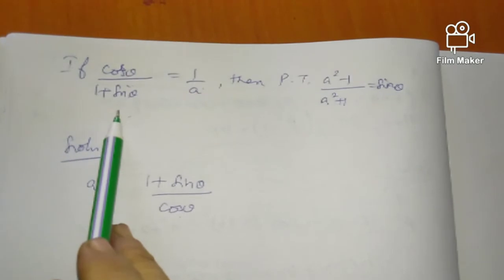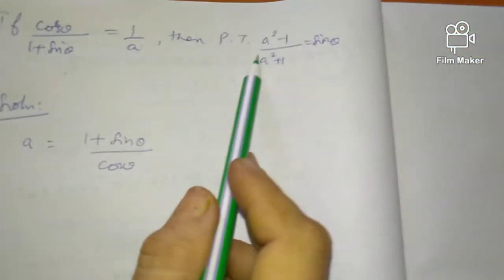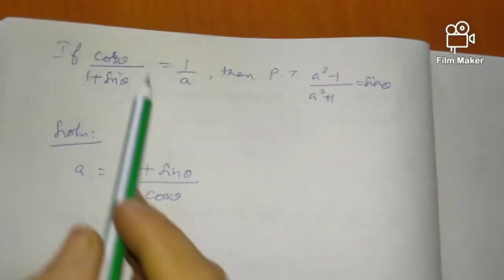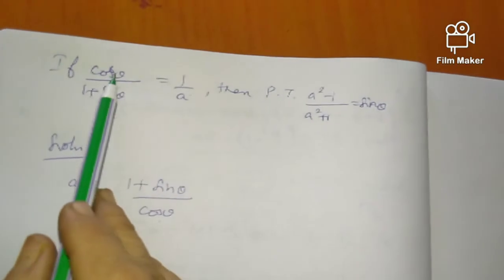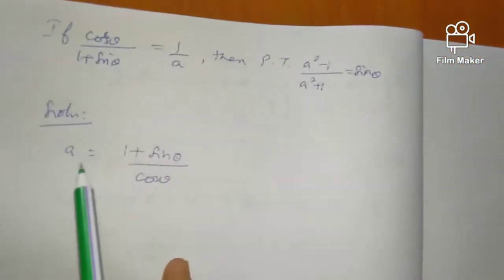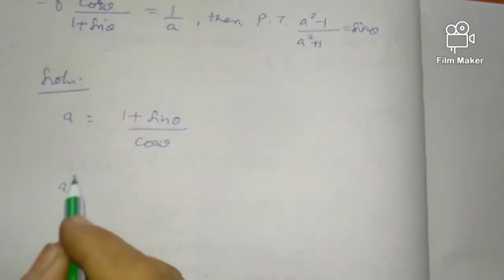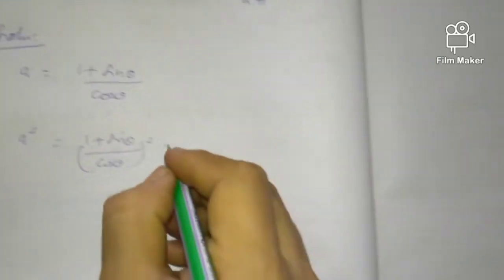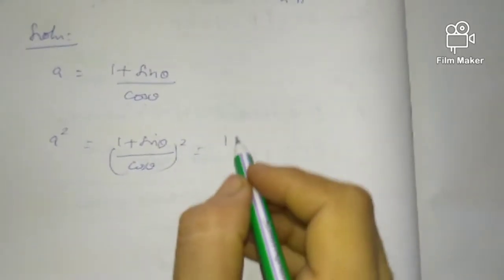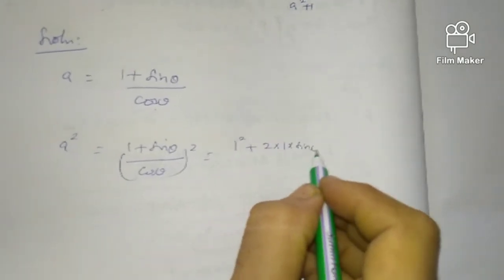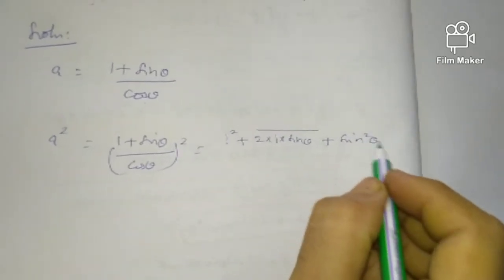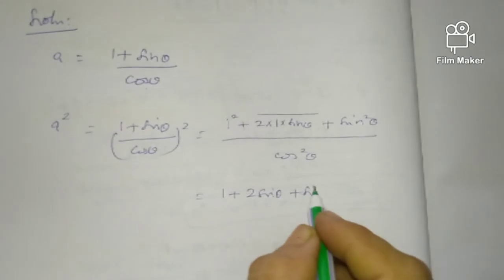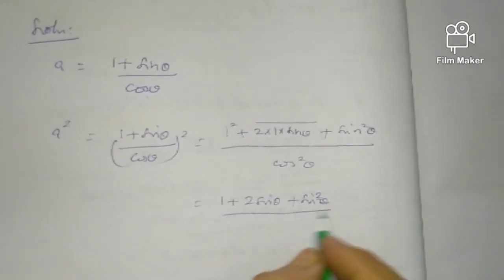Next question: If cos theta by 1 plus sin theta equals 1 by A, then prove that A squared minus 1 by A squared plus 1 equals sin theta. First, cross multiplying gives A equals 1 plus sin theta by cos theta. Then A squared equals 1 plus sin theta by cos theta whole squared, which equals 1 plus 2 sin theta plus sin squared theta by cos squared theta.